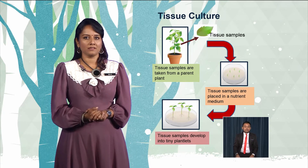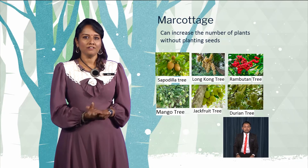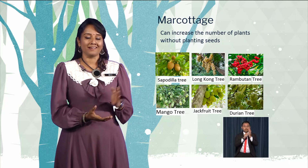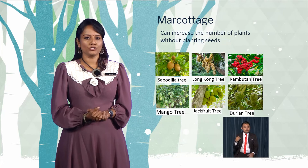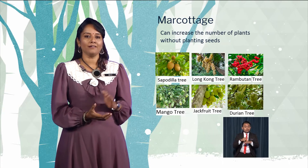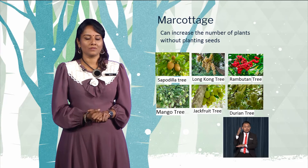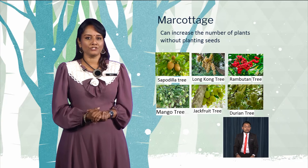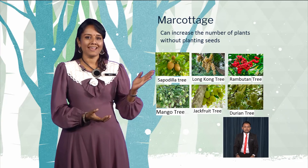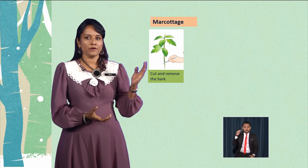The second method is marcotage. Marcotage is a process to increase the number of plants without planting seeds. Some plants reproduced using the marcotage method are mango trees, durian trees, longkong tree, sapodilla tree, jackfruit tree, and rambutan tree. This picture shows the marcotage process in reproducing plants.